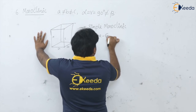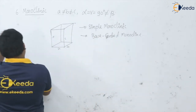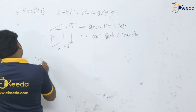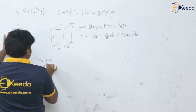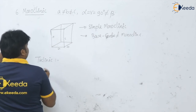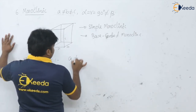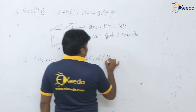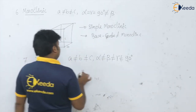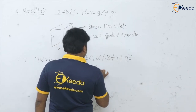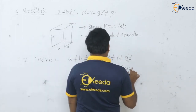The seventh and last is the triclinic structure, which is the most complex — all six lattice parameters a, b, c and alpha, beta, gamma are different, and none of the angles are 90 degrees. There is only simple triclinic in this system.